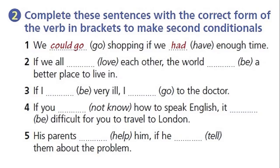Complete these sentences with the correct form of the verb to make second conditionals. Number 1: We could go shopping if we had enough time. Number 2: If we all loved each other, the world would be a better place to live in. if بيجيلها past simple فـ loved صح، والجملة التانية would be.